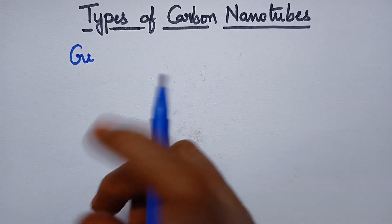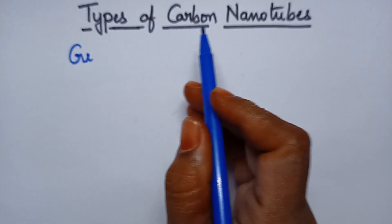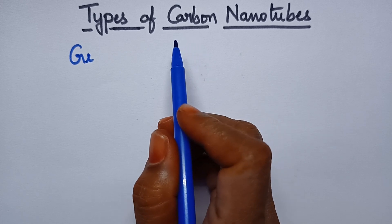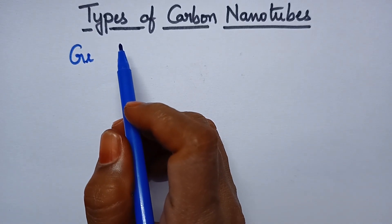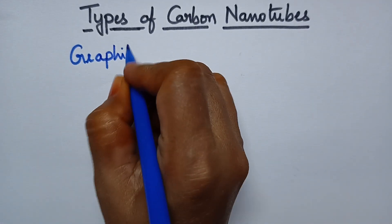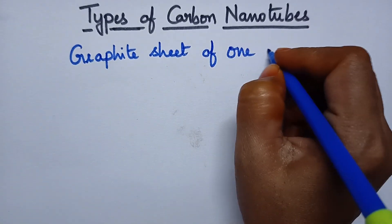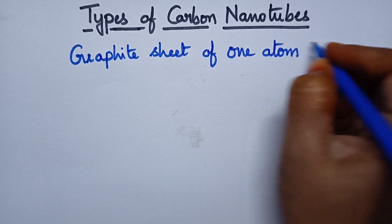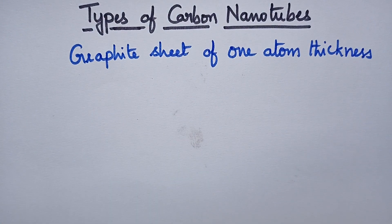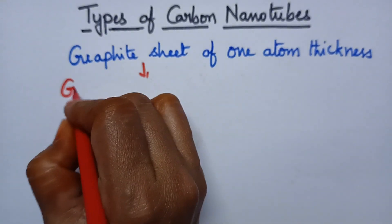Hello students, welcome back to my channel. In this video I am going to discuss in detail about the types of carbon nanotubes. Carbon nanotubes can be obtained by rolling a graphite sheet of one atom thickness. The graphite sheet of one atom thickness is called a graphene sheet.